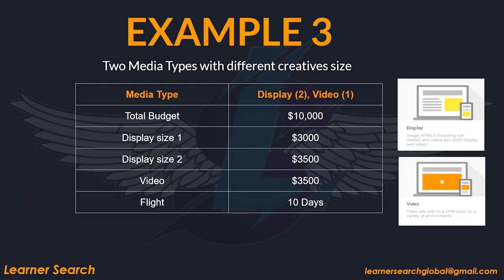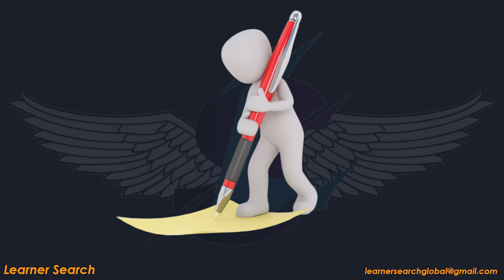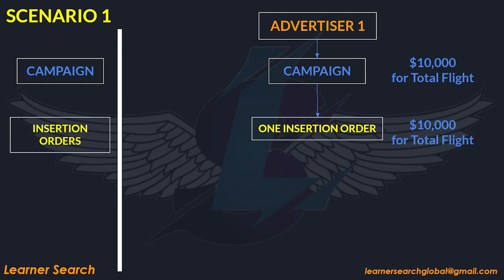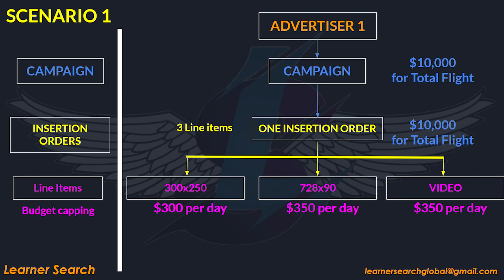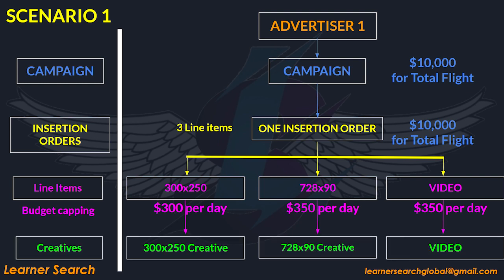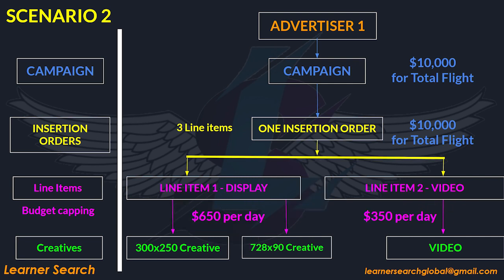Take a look at example 3. In this case, we will need to create a campaign for two separate display creatives and one video creative. Each one has its own budget. The flight will last the same 10 days. Pause this video for one minute and draw a sample structure for the given details. Create a single campaign, a single IO. Under this IO, create three line items and allocate their own budget for each line and assign creatives. Due to the fact that the same media type creative is placed under a single line item, let's add two display creatives under the display line item and select creative rotation. The video line item is assigned with the video creative.